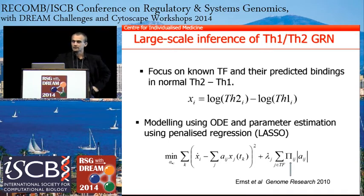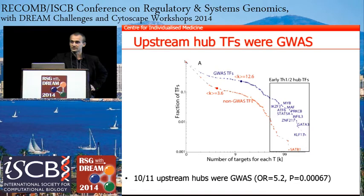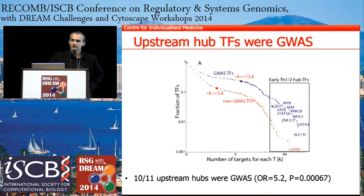With this network, we started by counting the number of targets each transcription factor had, generating a degree distribution plot. We split the distribution into JIVAS transcription factors and non-JIVAS, and found that JIVAS transcription factors had a higher degree generally — about four times as many targets. This was not due to the prior matrix; it was an emergent property. Among the 11 top transcription factors by degree, 10 were JIVAS.